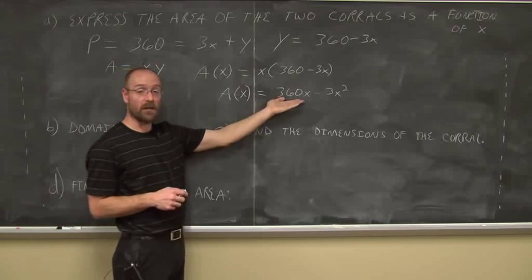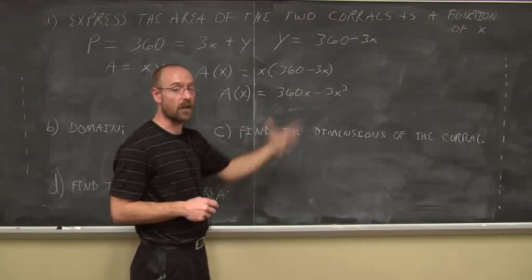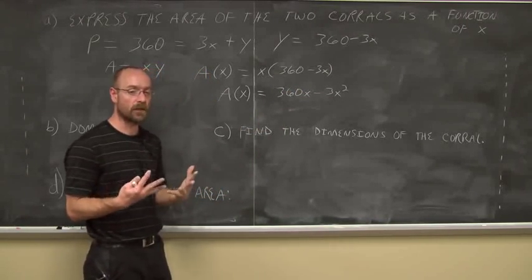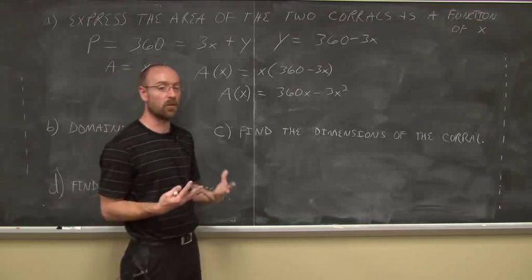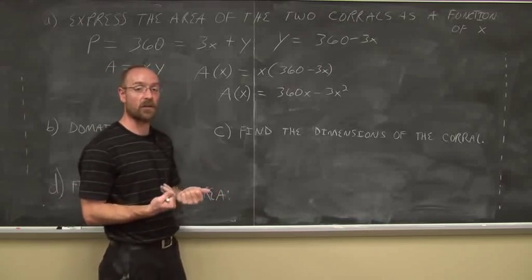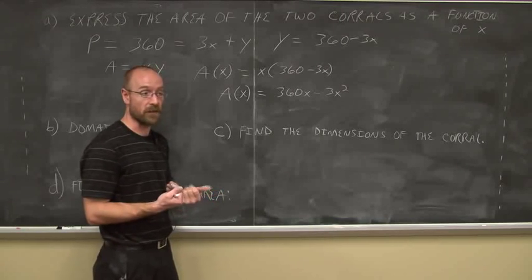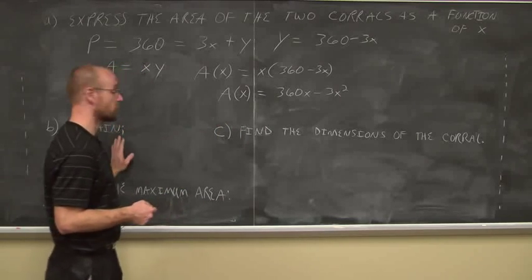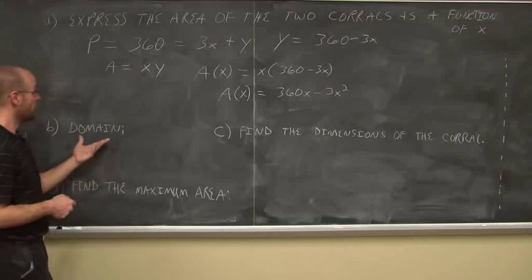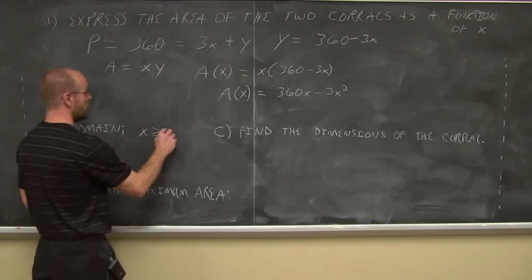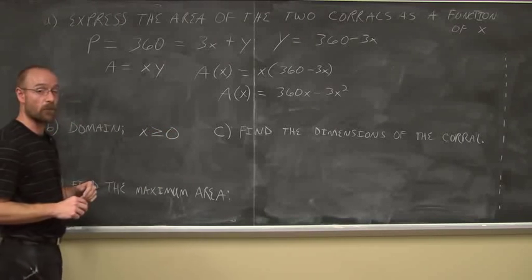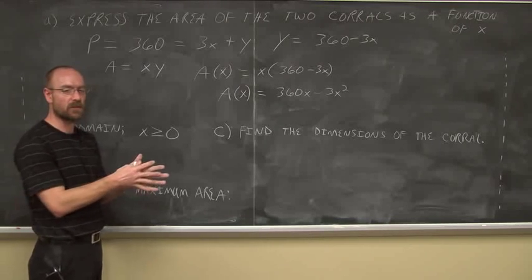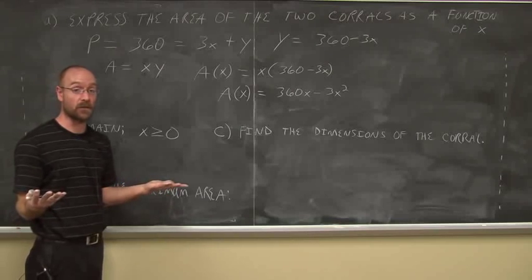Now, the next thing it asks is the domain. I look at the domain of a quadratic function and say that's all real numbers, I can plug anything in for x. But here's where we have to think critically. How does this apply to the real world? Can I have a side of a corral that is less than 0? Can I have a negative distance? No. So there is a domain restriction. That domain restriction is x must be greater than or equal to 0.